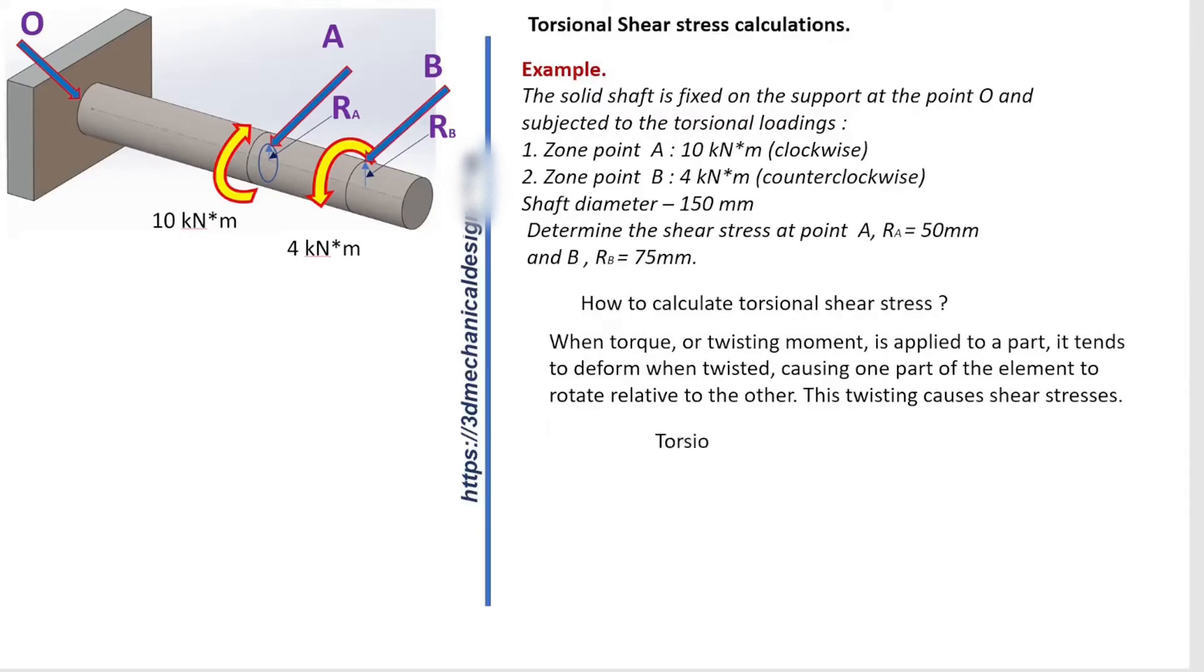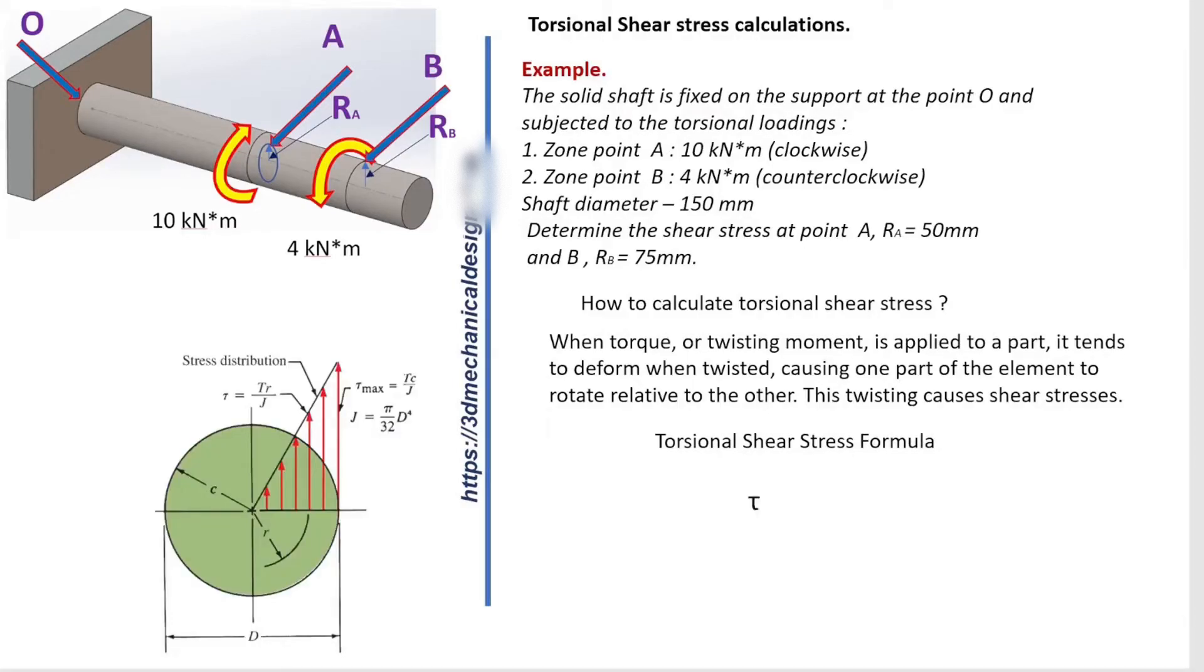Torsional shear stress formula: Tau equals T times C divided by J. Where T is torque, C is radius of the shaft, and J is polar moment of inertia.